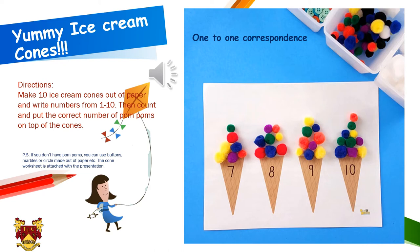Dear parents, for this activity I have attached a worksheet with pictures of empty cones. Please help your child cut the cones — you will need 10 cones, so kindly make 3 photocopies of that paper. After cutting, write numbers from 1 to 10, then tell your child to count and put the correct number of pom-poms on top of each cone. The number of pom-poms should match the number on the cone. If you don't have pom-poms, you can use buttons, marbles, or paper circles. I hope kids will enjoy this activity!